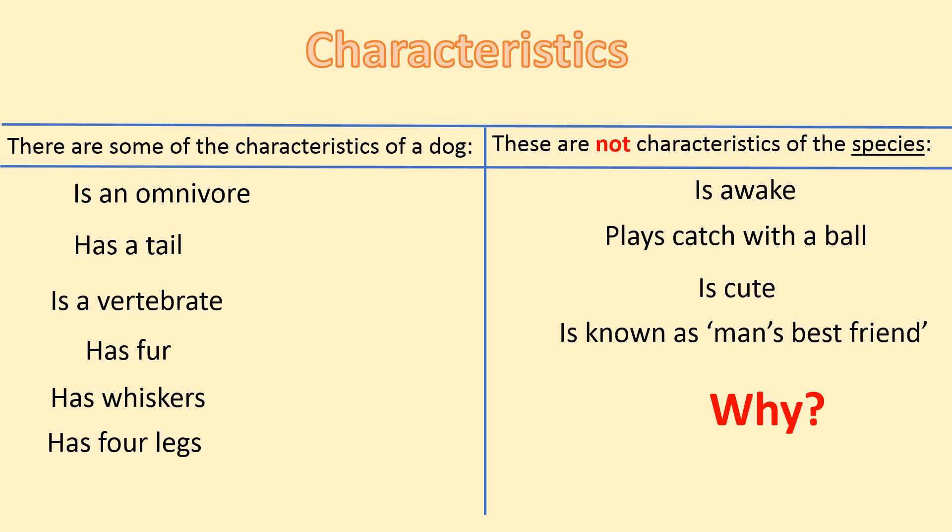These are not characteristics of a dog because they're not unique to the dog. Is awake — is that only something unique to the dog? No, because I'm awake right now. So they're not the ingredient that makes a dog a dog. The dog has whiskers, it has four legs — that's what makes it special, unique to the dog. It's an omnivore. All of these characteristics, when you put them together, make the dog a dog. Playing catch with a ball, is cute — that's just an opinion. It's not a characteristic.